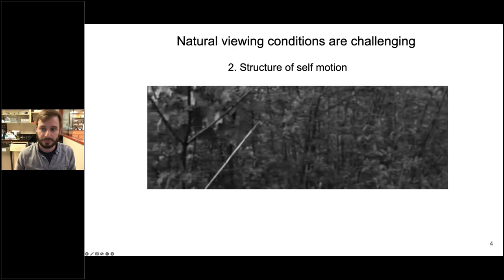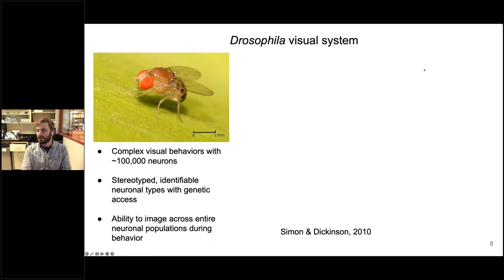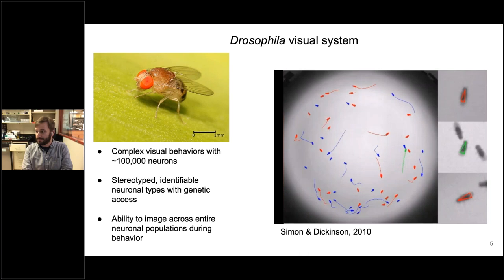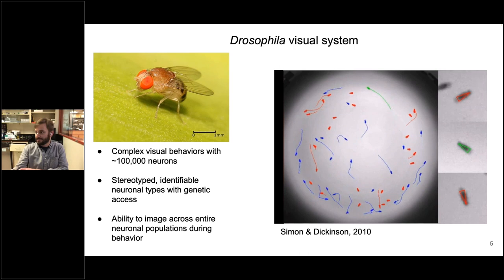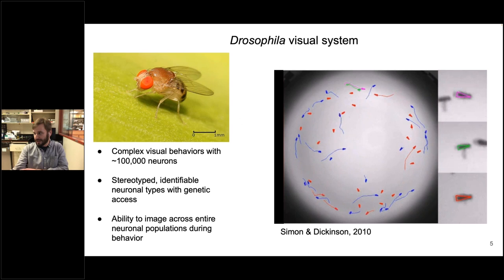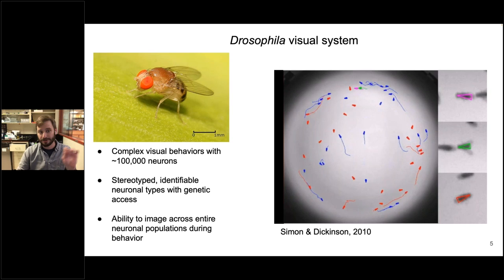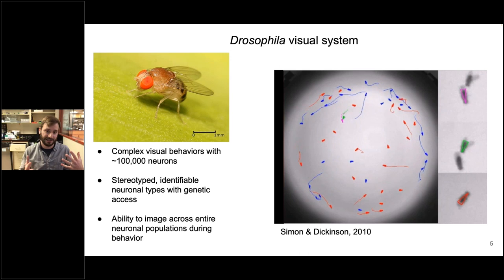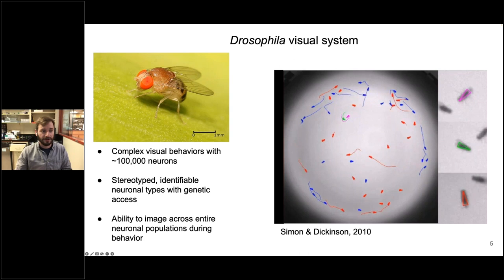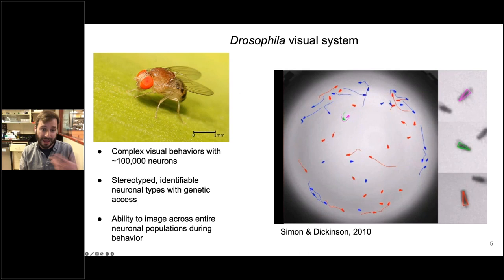I study this question in Drosophila, the fruit fly. This is a really great system to study visual neuroscience because these flies perform really complex visual behaviors with something like one or two hundred thousand neurons. For example, here's a video from Michael Dickinson's lab showing fruit flies running around a chamber — a green male fly identifies a pink-labeled female and uses visual information to track her through a really complex environment with lots of motion from themselves and other things in the world. Flies also have stereotyped, identifiable neuron types with really great genetic access, and because it's a pretty small brain, we have the ability to image across entire neuronal populations during behavior.